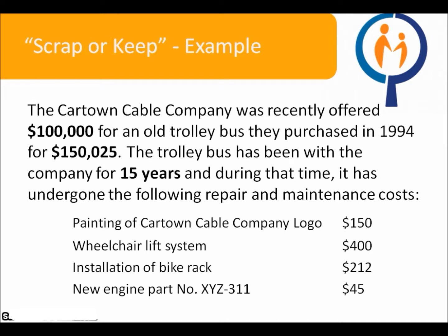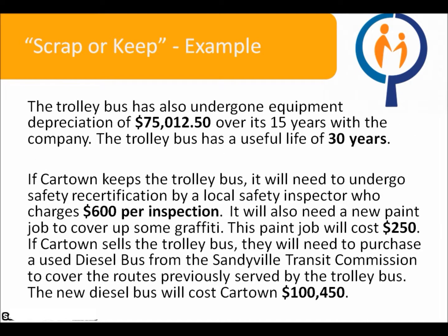Let's try an example. The Cartown Cable Company was recently offered $100,000 for an old trolleybus they purchased in 1994 for $150,025. The trolleybus has been with the company for 15 years, and during that time it has undergone various repair and maintenance costs. The trolleybus has also undergone equipment depreciation of $75,012.50 over its 15 years with the company, and has a useful life of 30 years. If Cartown keeps the trolleybus, it will need safety recertification by a local inspector who charges $600 per inspection, and a new paint job to cover graffiti costing $250. If Cartown sells the trolleybus, they will need to purchase a used diesel bus from the Sandyville Transit Commission to cover the routes previously served by the trolleybus, at a cost of $100,450.